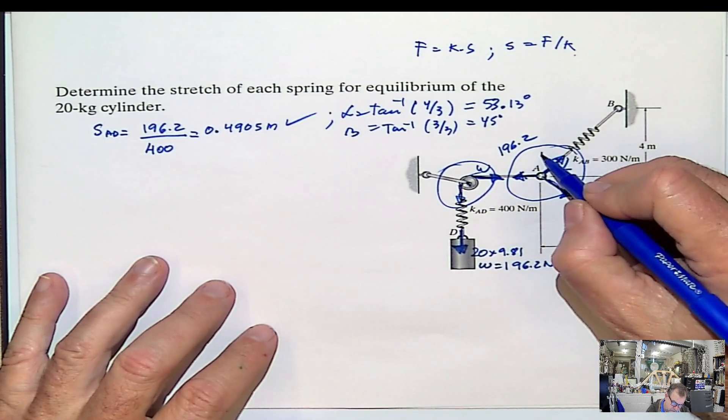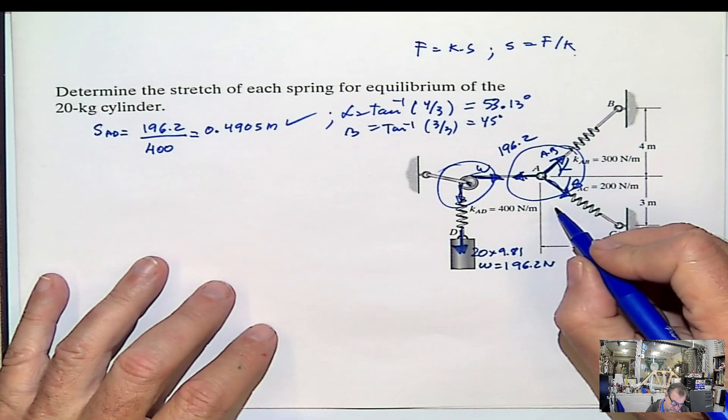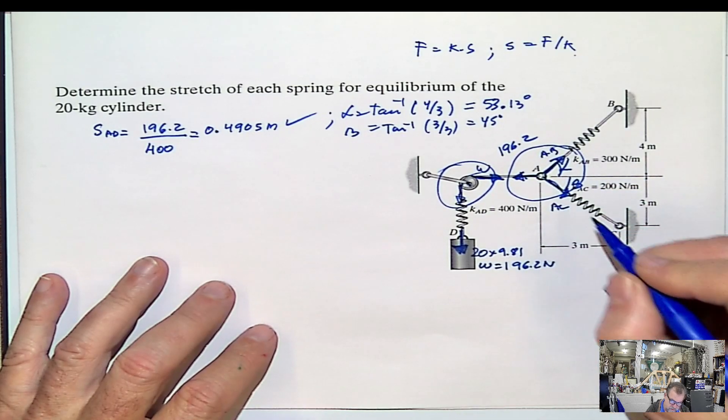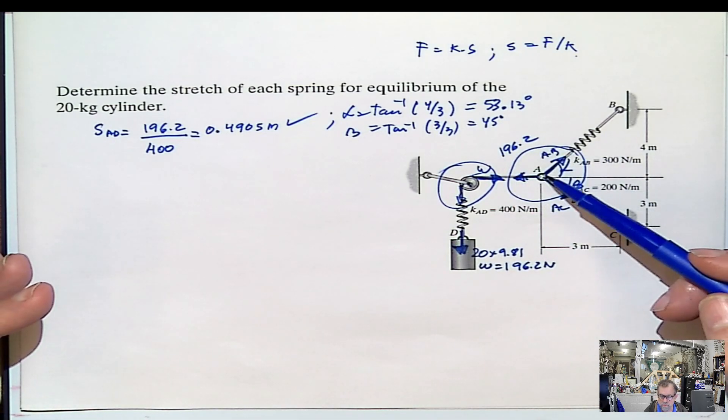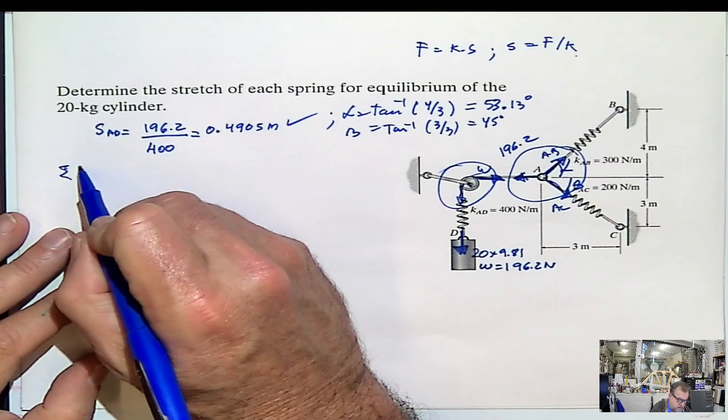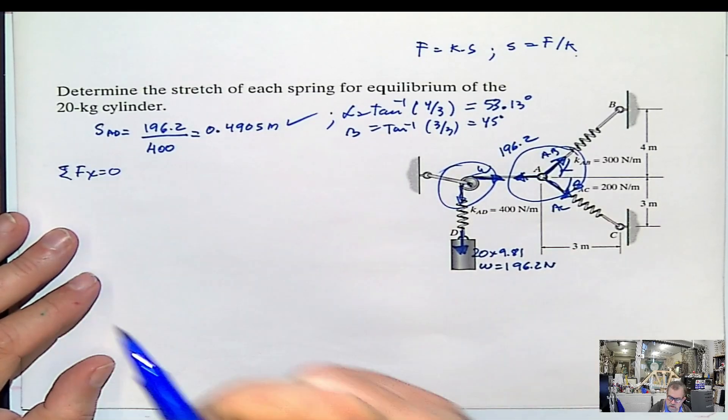And we know this is the force AB. And we know this is the force AC. What do we do? Two unknowns. Particle equilibrium. Summation of forces in x equals 0. Summation of forces in y equals 0.